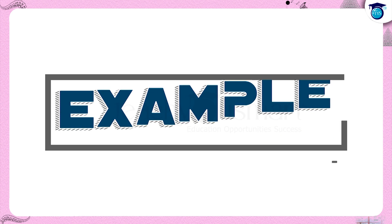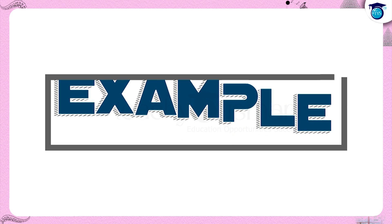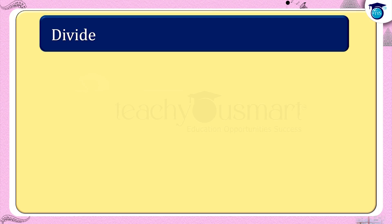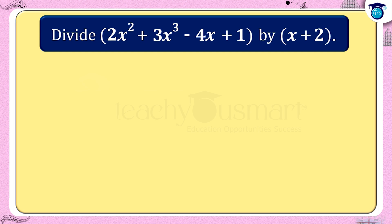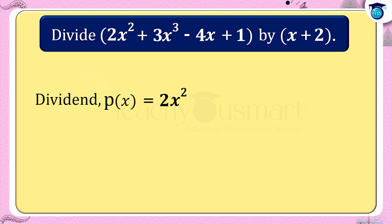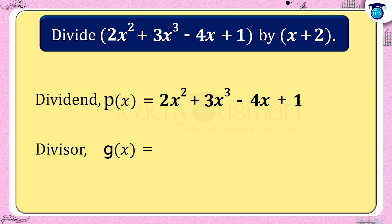Consider an example. Divide 2x² + 3x³ - 4x + 1 by x + 2. Here, the dividend is p(x) = 2x² + 3x³ - 4x + 1, and the divisor is g(x) = x + 2.